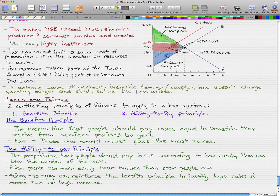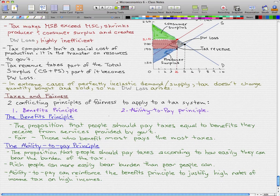One is the benefits principle, and the second one is the ability to pay principle. Now, the benefits principle is the proposition that people should pay taxes equal to the benefits they receive from services provided by the government. And it is a fair arrangement that those who benefit most pay the most taxes.